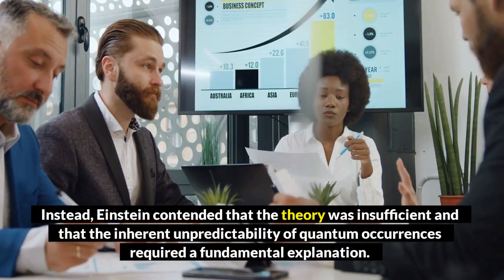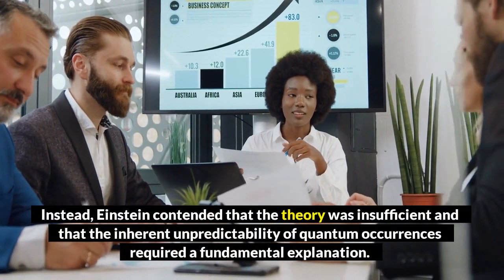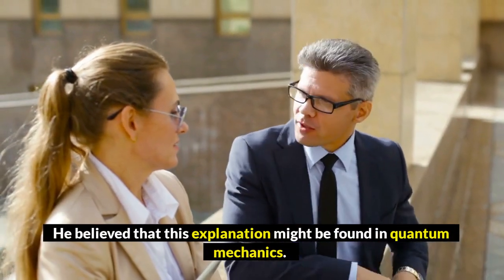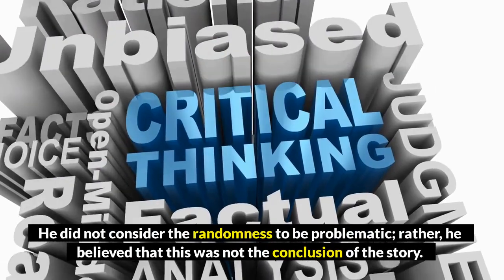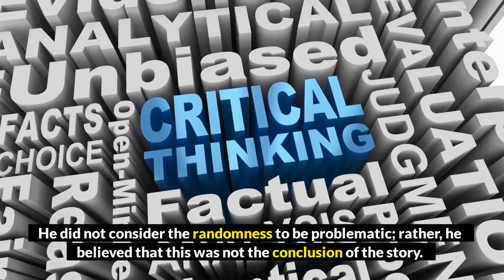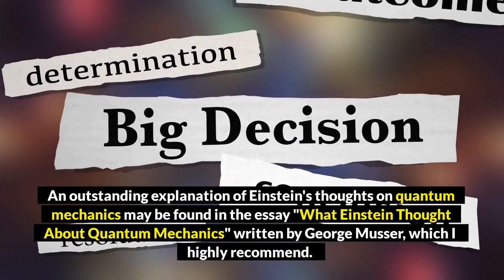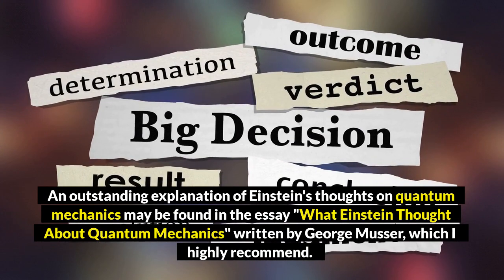Instead, Einstein contended that the theory was insufficient and that the inherent unpredictability of quantum occurrences required a fundamental explanation. He believed that this explanation might be found in quantum mechanics. He did not consider the randomness to be problematic; rather, he believed that this was not the conclusion of the story. An outstanding explanation of Einstein's thoughts on quantum mechanics may be found in the essay What Einstein Thought About Quantum Mechanics written by George Musser, which I highly recommend.